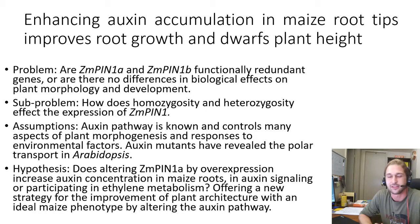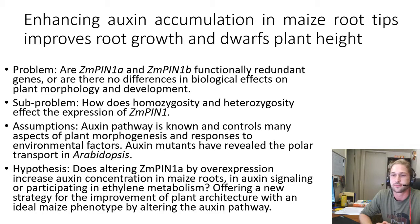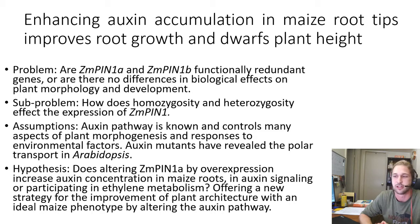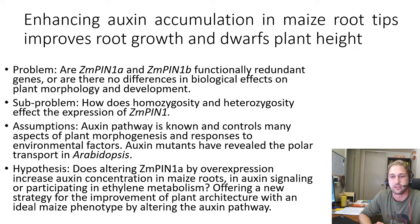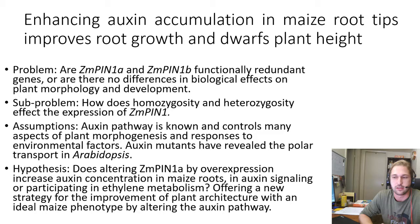A secondary problem I identified was homozygosity and heterozygosity — we'll see in their diagrams how they showed differences in gene expression between homozygotes and heterozygotes. They assumed the auxin pathway is known and controls many aspects of plant morphogenesis in response to environmental factors. This has been tested with Arabidopsis thaliana, a common plant used in scientific laboratories though not commercially farmed. Auxin mutants have revealed a polar transport mechanism in Arabidopsis, moving in a shoot-to-root or up-and-down fashion.